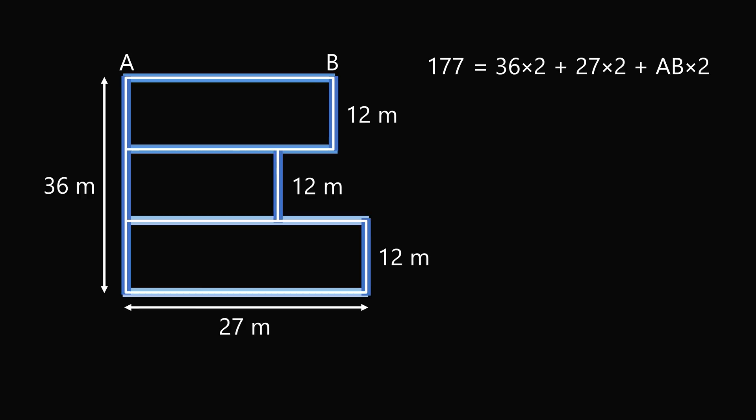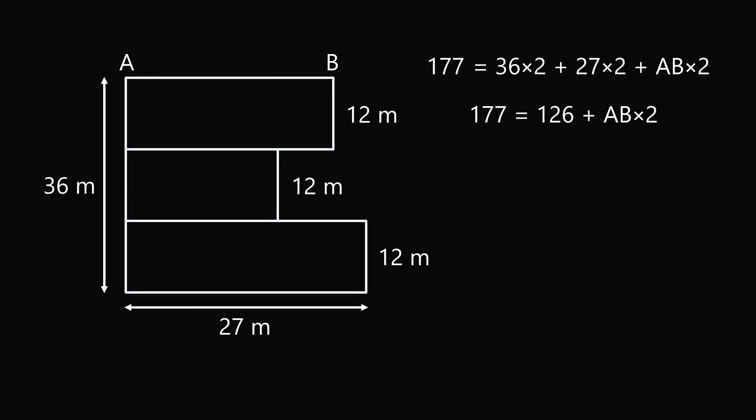We've covered all the fencing. So now we just focus on this equation. We have 177 is equal to 126 plus AB times 2, that means 51 is equal to AB times 2, which means AB is equal to 51 over 2 or 25.5. That's the answer to part A.